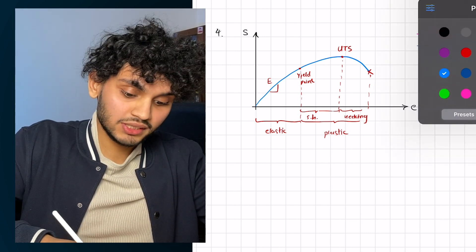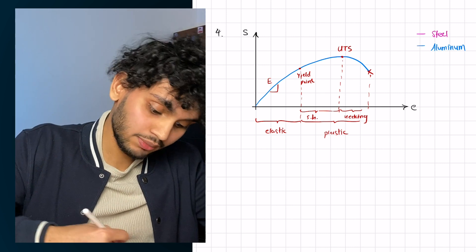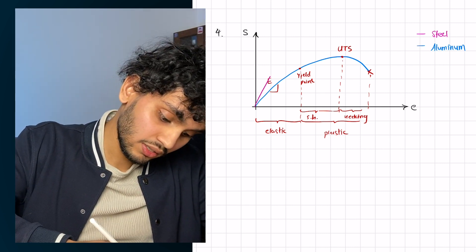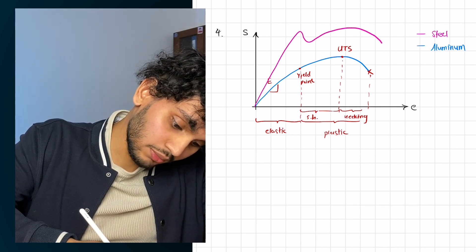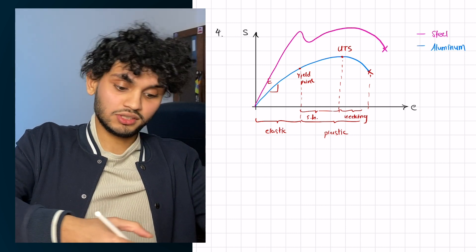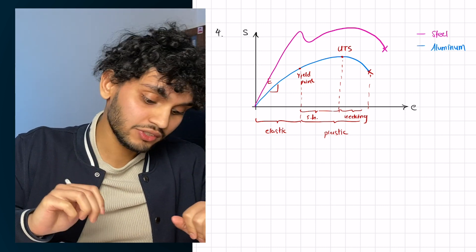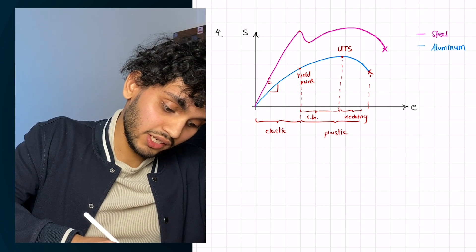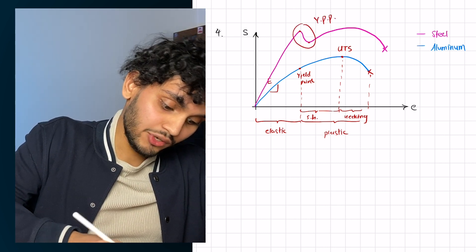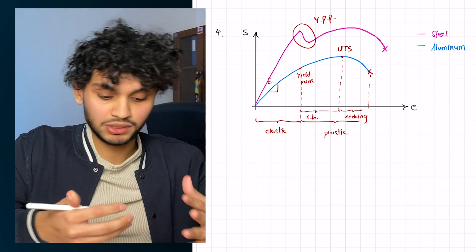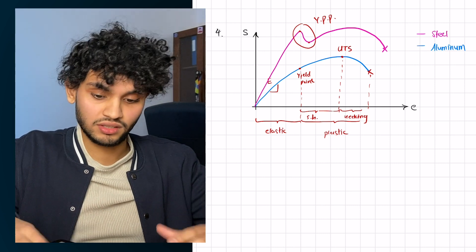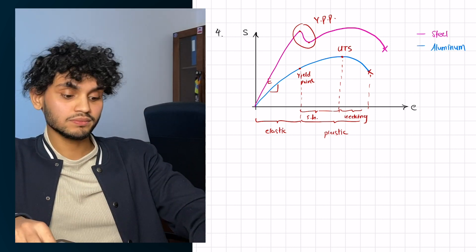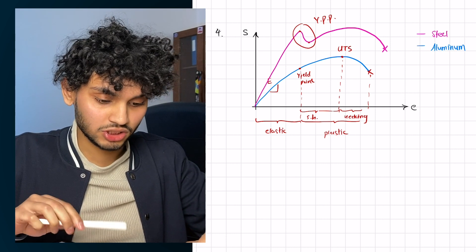Steel follows the same general shape as aluminum, except its elastic portion is much steeper, reflecting a higher Young's modulus, and it is a stronger material overall. One key difference is that steel exhibits the yield point phenomenon, where there are two distinct yield points. This occurs because of certain interstitial atoms within the microstructure of steel.